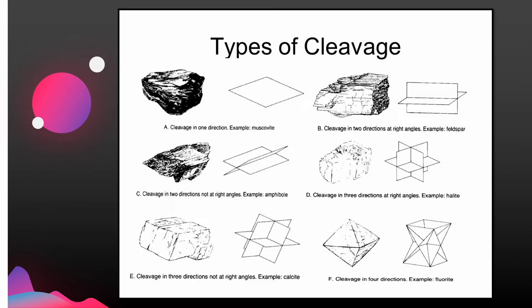In this figure you can see different types of cleavage: cleavage in one direction, cleavage in two directions at right angles, cleavage in two directions not at right angles, cleavage in three directions at right angles, and so on.